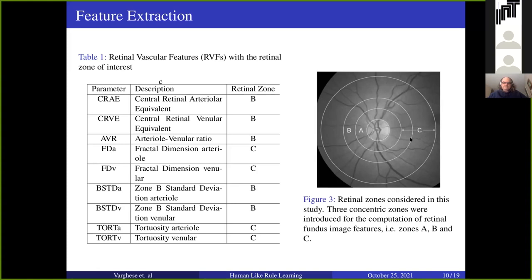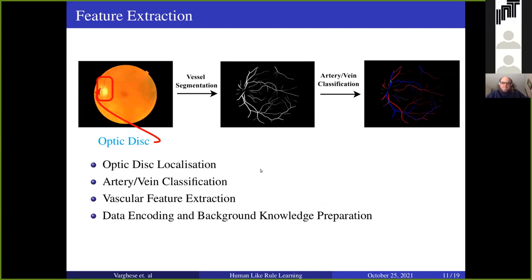As you can see, there are three different regions notated as A, B, and C, and the features depend on the location where they lie. We followed four different steps. As shown in the previous slide, it is very important to detect the optic center, so optic disk localization is a key step during feature extraction. We used matching mechanisms to detect the optic disc. The second stage is classification of arteries and veins, where we used deep learning models to classify arteries and veins. We then extracted those features and used encoding mechanisms to encode the dataset, representing it as background knowledge.